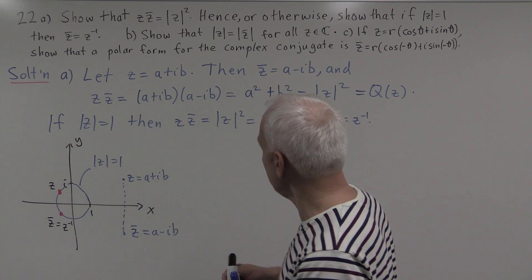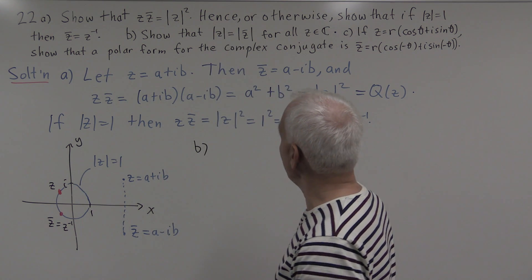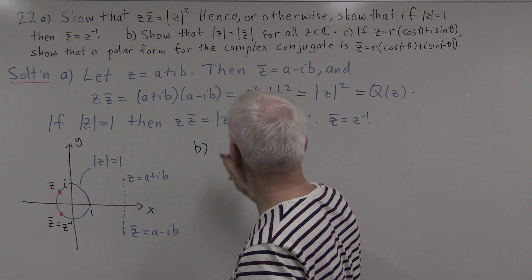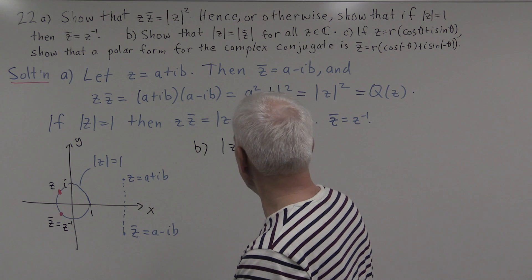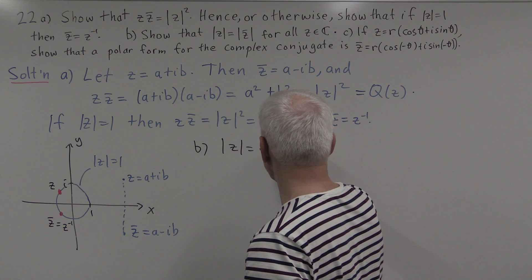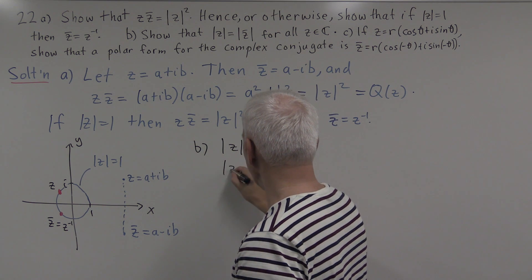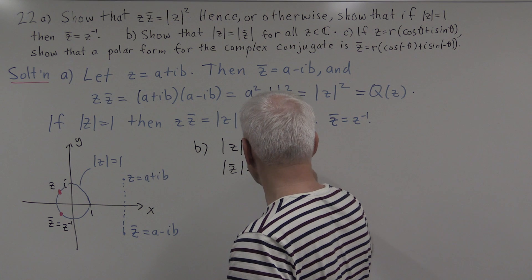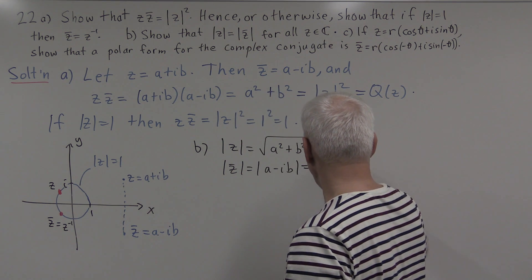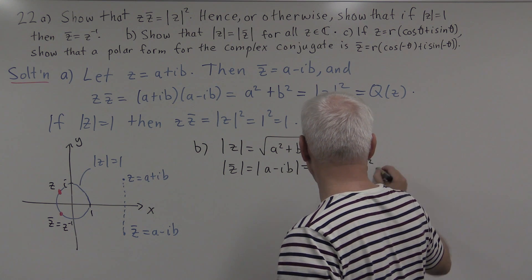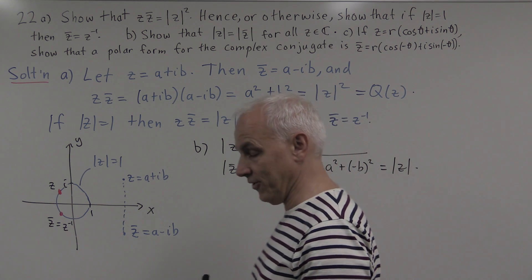Alright, now let's have a look at part b. So let's show that the modulus of z equals the modulus of z-bar. So the modulus of z, carrying on with our notation, is the square root of a² + b². And if we take the modulus of z-bar, which is the modulus of a - ib, that's square root of a² + (-b)², which is equal to the modulus of z because (-b)² is the same as b².